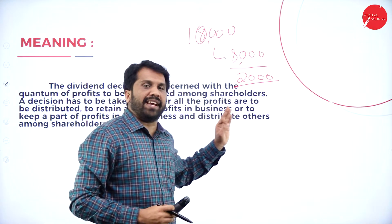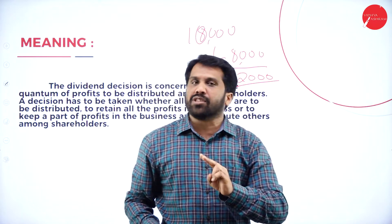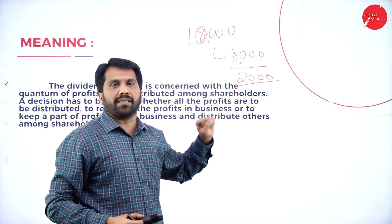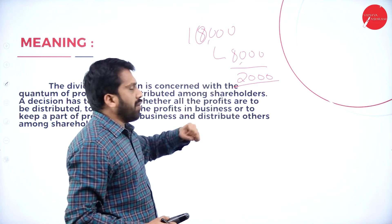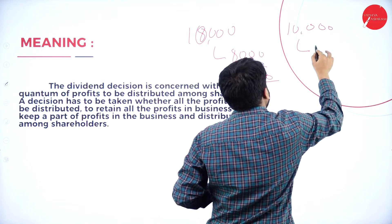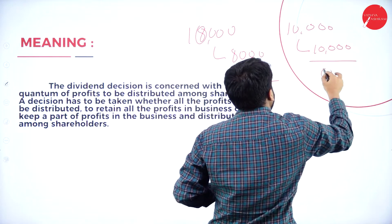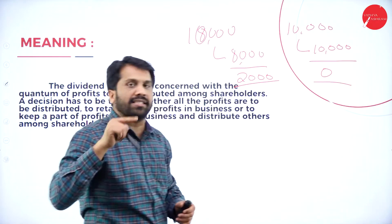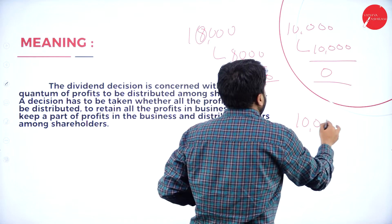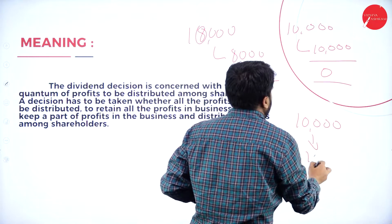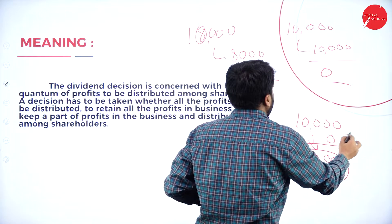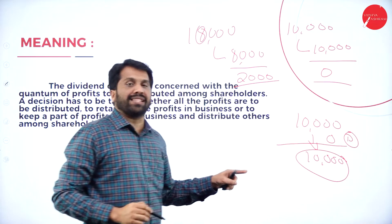Consider three examples. Example 1: out of 10,000, 8,000 is given as dividend and 2,000 is kept as retained earnings. Example 2: they got 10,000 and the complete 10,000 is given to shareholders, so retained earnings is zero. Example 3: they got 10,000 and the complete 10,000 is saved — dividend paid is zero, so complete 10,000 is retained earnings.